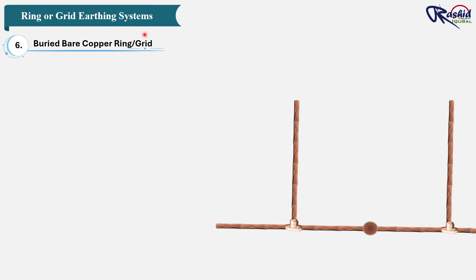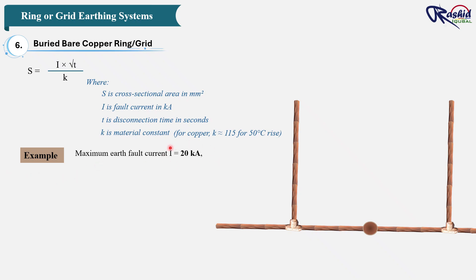Now we will learn the conductor sizing. This buried ring must carry full fault current for the clearing time of the protective device. So we can use this formula: S = I × √(T / K), where S is the cross-sectional area in mm², I is the fault current in kilo-amperes, T is the disconnection time in seconds, and K is the material constant. For bare copper conductor, we use K = 115 for 50 degree centigrade. So let's take an example: our maximum earth fault current I = 20 kA, and protection clearing time T = 1 second. So let me substitute this value in the formula: S = 20 × √(1 / 115) = 174 mm². S = 174 mm².